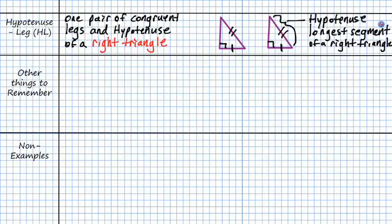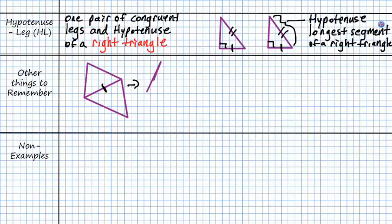Some other things to remember: if you have a figure with a shared side and you break it down into two triangles — an upper triangle and a lower triangle — that shared segment occurs in both triangles. Therefore, it is congruent to itself, which gives us a congruency statement right there. This is called side overlap.